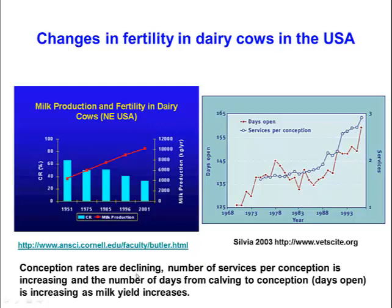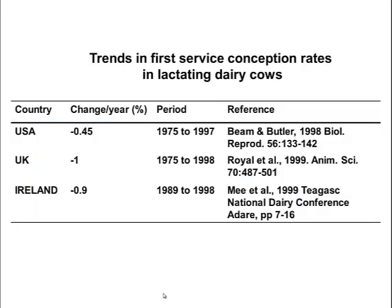To summarise: conception rates are declining, the number of services per conception is increasing, and the number of days from calving to conception — days open — is increasing as milk yield increases. This is not just from one study; a number of studies have reported on this trend. The average reduction in conception rate per year between 1975 and 1997 in one study was almost 0.5% per year. In the United Kingdom it was in the order of 1%, and similarly in an Irish study it was minus 0.9%. So it's quite a dramatic change — a gradual reduction in conception rate occurring over time.